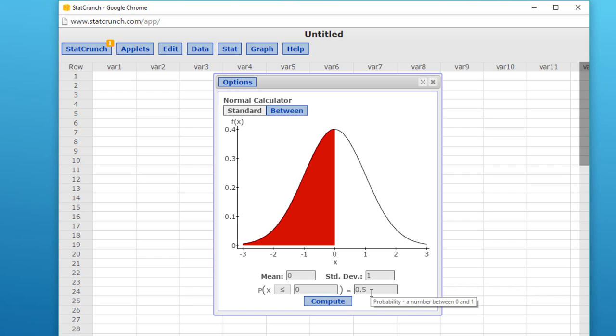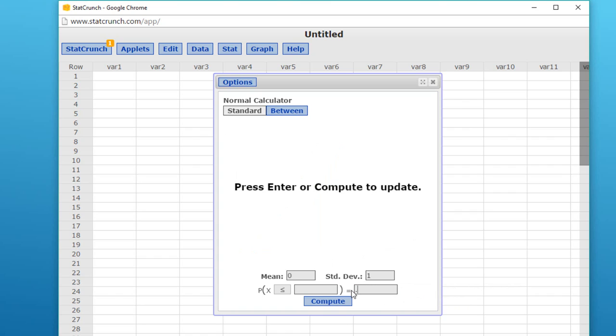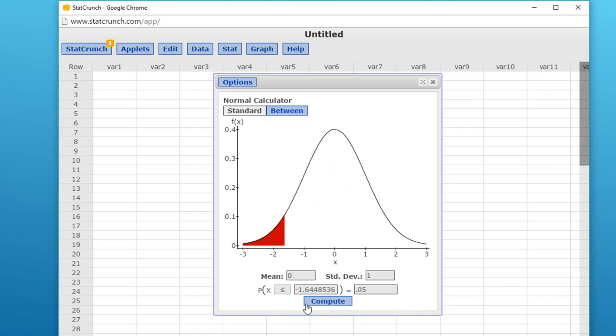We don't have to change the mean and standard deviation. What we have to do is put in the alpha, or in this case, because it's a two-tailed test, we put in half of alpha, which would be 0.05. I'm going to first calculate the left tail, compute, and we see that's -1.645, rounding off.